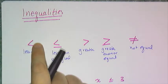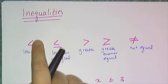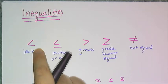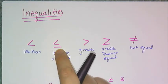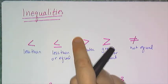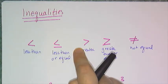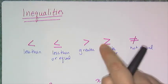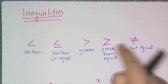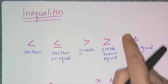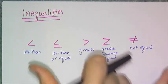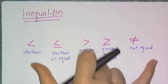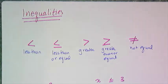First off, we have the symbol of less than, and then we have the symbol of less than or equal to, then we have the symbol of greater than, and the symbol of greater than or equal to, and the symbol of not equal to. And these things we're going to need for domain and range.